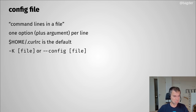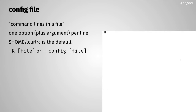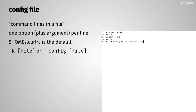You tell curl to use a config file with the capital -K flag or --config followed by a file name, and curl will read command line options from that file. Let me show you in the terminal. I'll put command line options in a file called config.txt — for example, saving the output to a file called 'output'. I use it with -K config.txt and a URL like the curl web page.